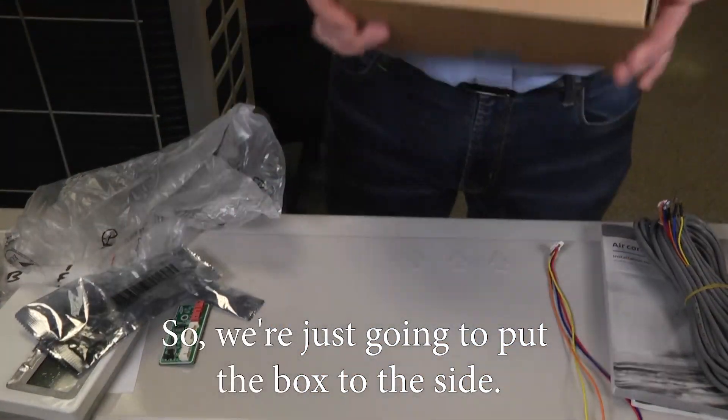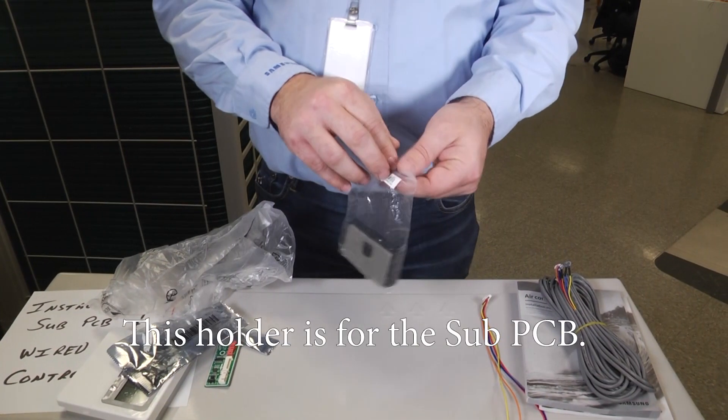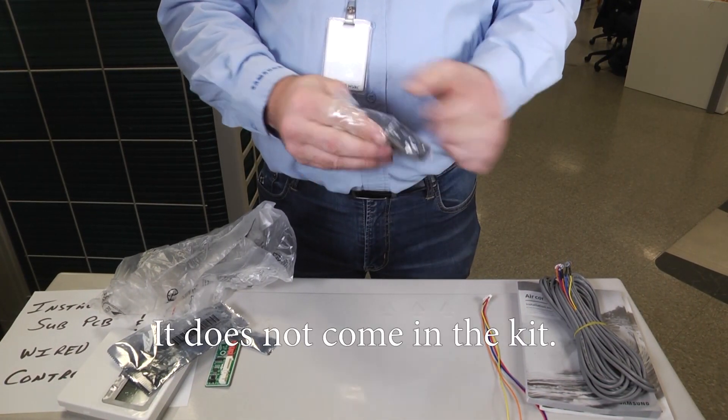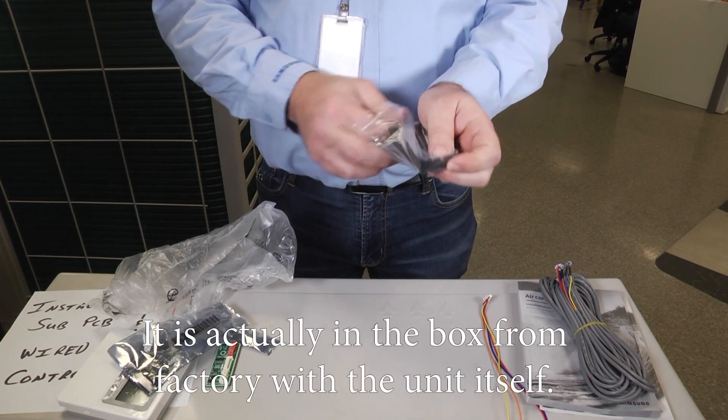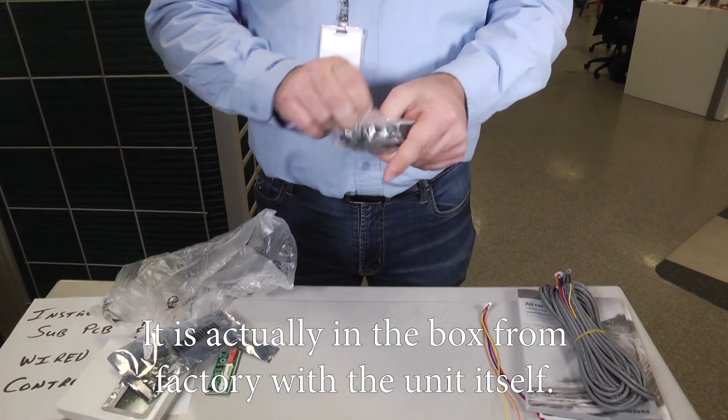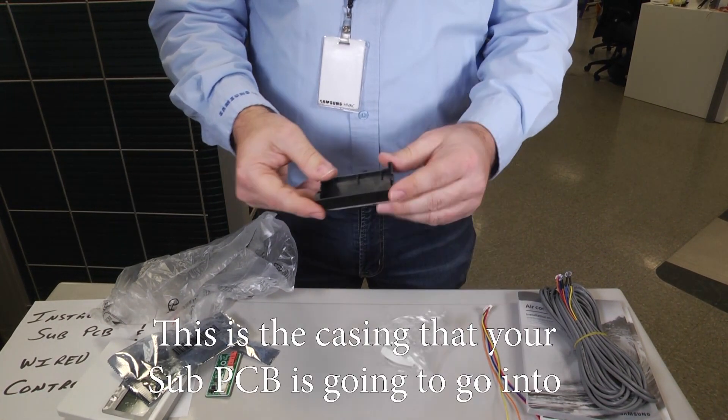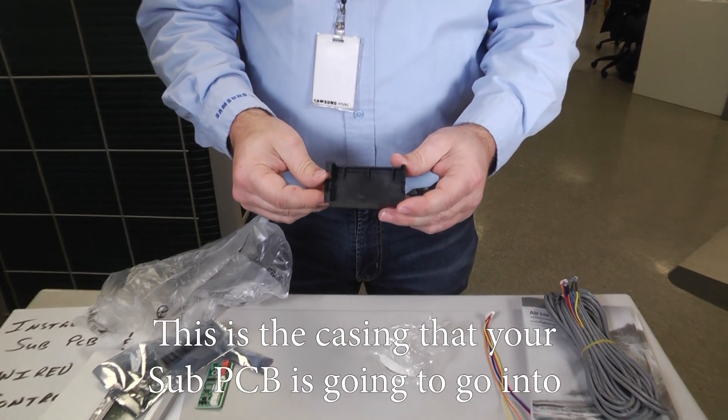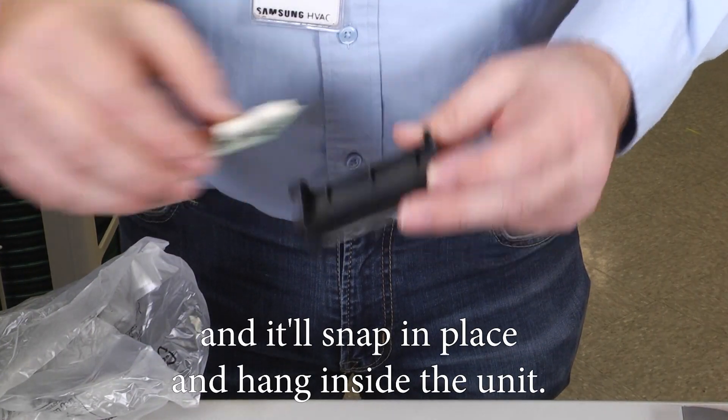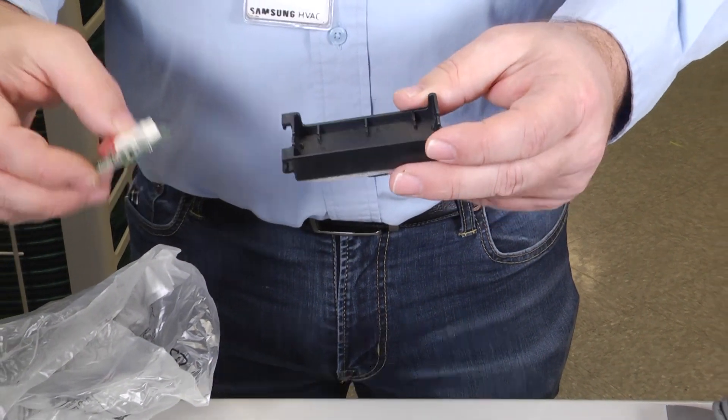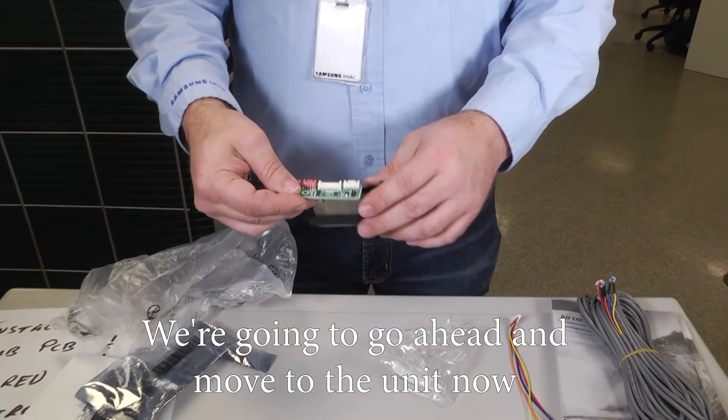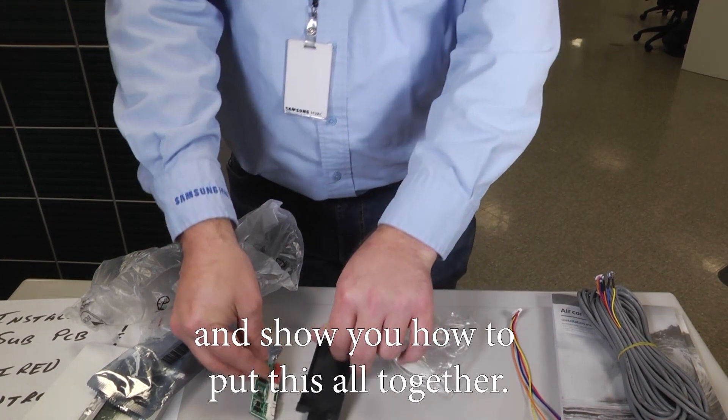So we're just going to put the box to the side. This holder is for the sub PCB. It does not come in the kit. It is actually in the box from factory with the unit itself. This is the casing that your sub PCB is going to go into and it'll snap in place and hang inside the unit. We'll get into that in a second. We're going to go ahead and move to the unit now and show you how to put this all together.